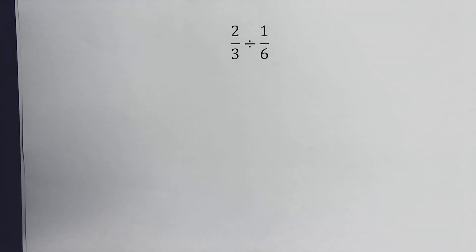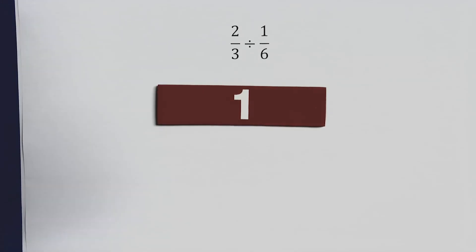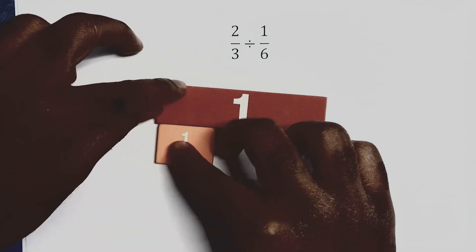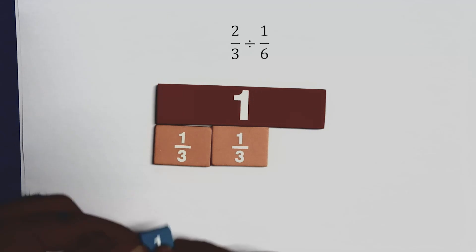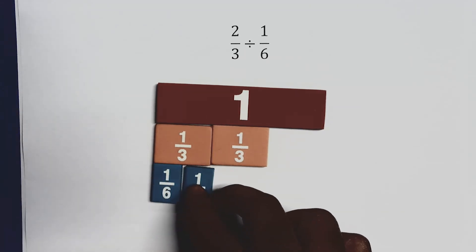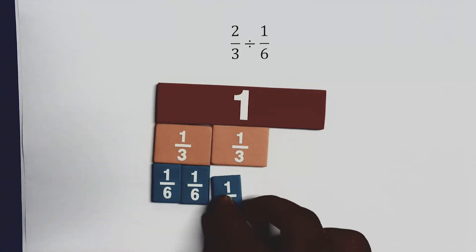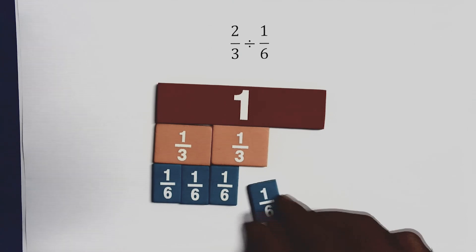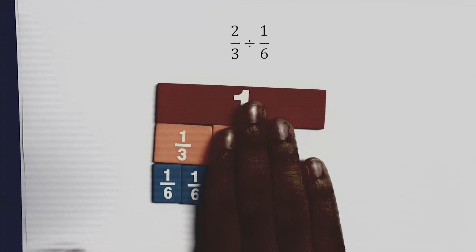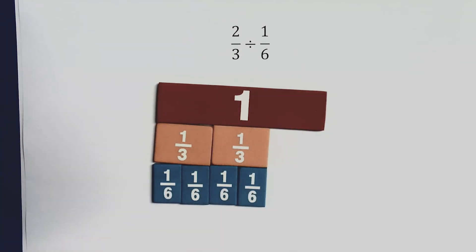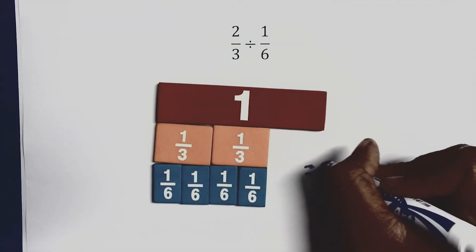Here are my fraction bars. I have a whole for my one. I'm going to use my thirds, and then I'm going to add my sixths. With this fraction model, we can look and see how many sixths are in two-thirds. Looking at this, I know that there are two sixths in one third. So there are four sixths in two-thirds, meaning the answer should be four.